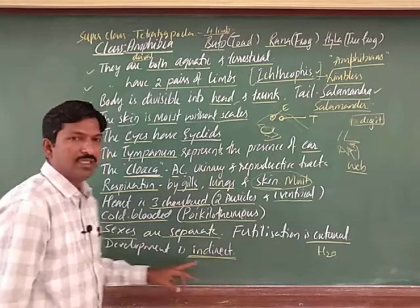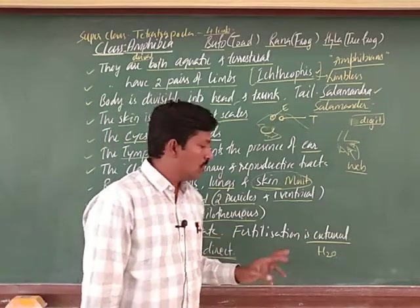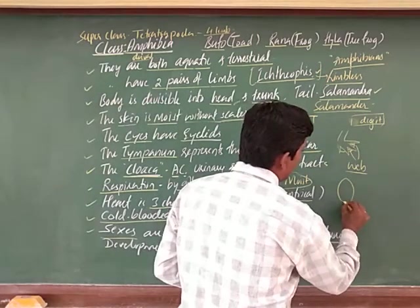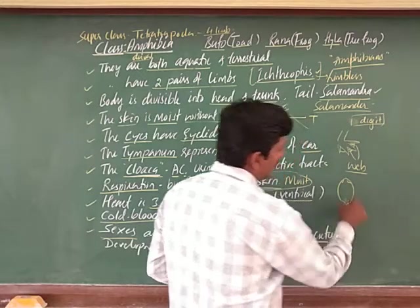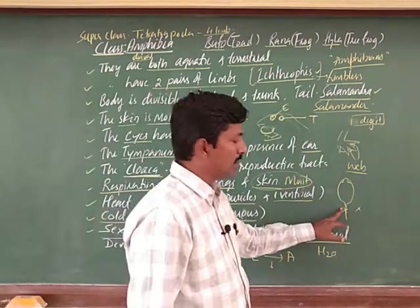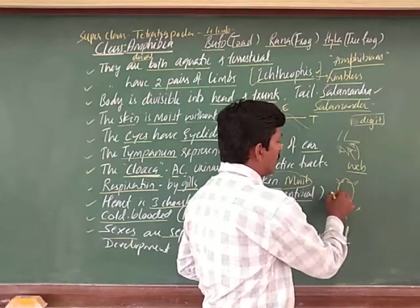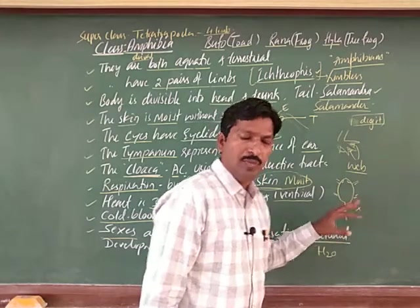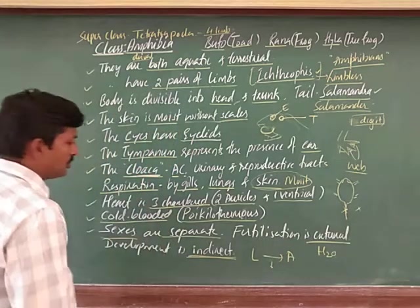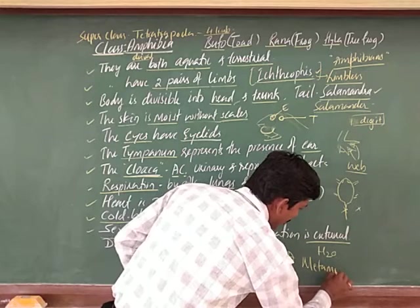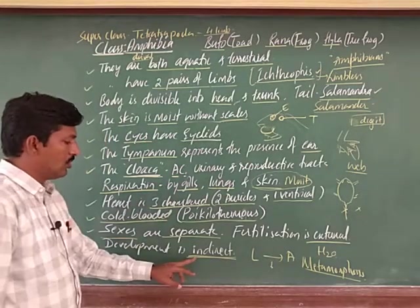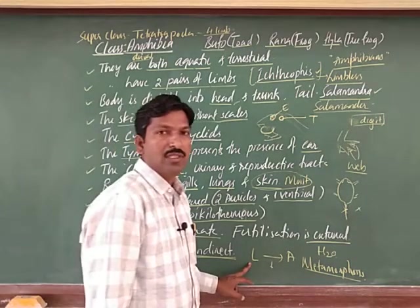Development is indirect because a larval stage is present. The larva of a frog has a tail and no limbs. The tail is eventually lost and four limbs are formed — many changes take place from larval stage to adult stage. This is called metamorphosis. Due to the presence of larval stage, there is no direct development — it is indirect development.